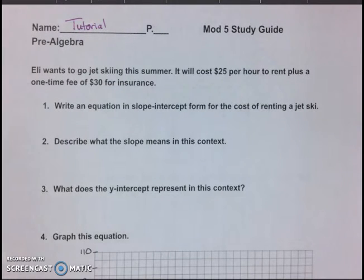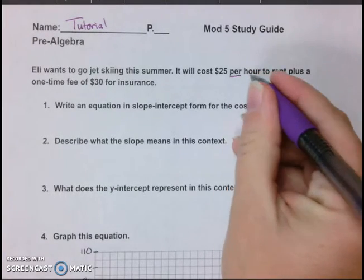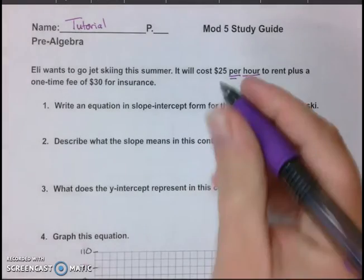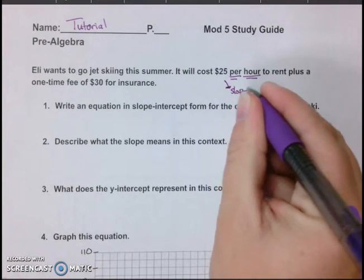Hello class. I will go through and explain each one of these so hopefully you know how to do them on your quiz. So we have Eli wants to go jet skiing this summer. It will cost $25 per hour. Remember whenever I said there's a rate? If there's a rate, that's always your slope. The rate is always your slope.